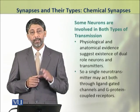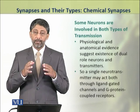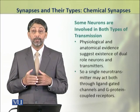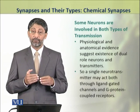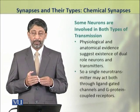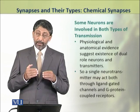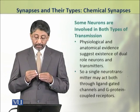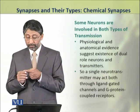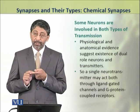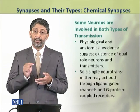There are some neurotransmitters which are involved in both types of transmission — that is, fast as well as slow. A single neurotransmitter can act on both ligand-gated ion channels and G-protein coupled receptors.